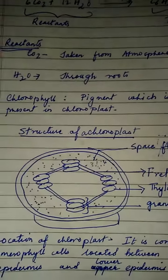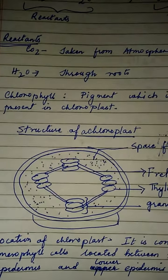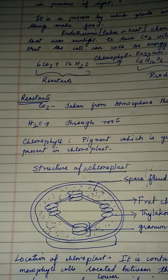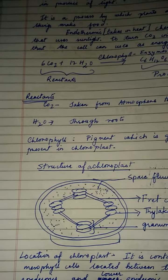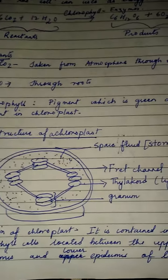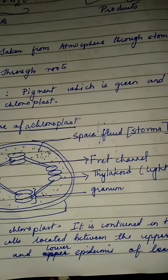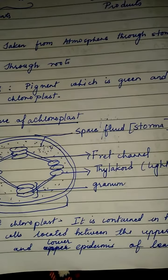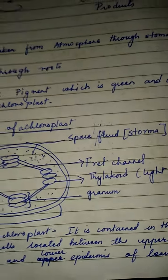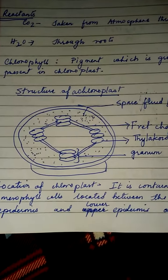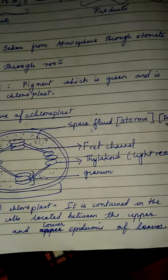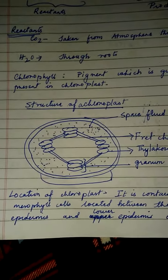I have drawn a simple diagram of the chloroplast. This type of diagram often comes in exams — you may be asked to draw or label a diagram of the chloroplast. The structure includes the stroma, the grana channel, and the thylakoid. The three layers together are known as the granum.